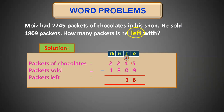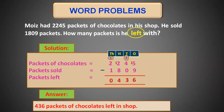Two minus eight is not possible as two is smaller than eight. So the two at hundreds place will take a borrow from two at thousands place — thousands becomes one, and two hundreds becomes twelve hundreds. Twelve minus eight is four, and one minus one is zero. So 436 packets are left. We write the answer statement as: 436 packets of chocolates are left in the shop.